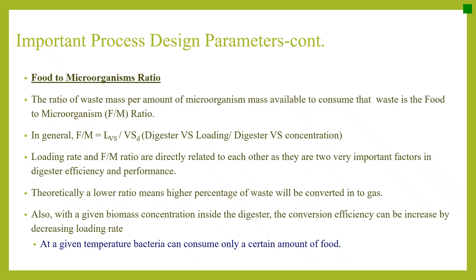The food to microorganism ratio (FM ratio) is the ratio of waste mass per amount of microorganism mass available to consume that waste. FM ratio equals digester VS loading divided by digester VS concentration. Loading rate and FM ratio are directly related and are two very important factors in digester efficiency and performance. Theoretically, a lower ratio means a higher percentage of waste will be converted into gas. With a given biomass concentration inside the digester, conversion efficiency can be increased by decreasing loading rate.